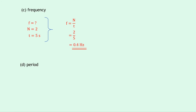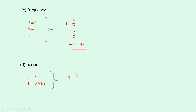And lastly part D says to find the period of the waves. We're trying to find capital T, the period, and we now know that the frequency from part C is 0.4 hertz. Writing down the relationship between T and F, we have T equals 1 divided by F. Substituting in the numbers gives 1 divided by 0.4, which gives an answer of 2.5 seconds.